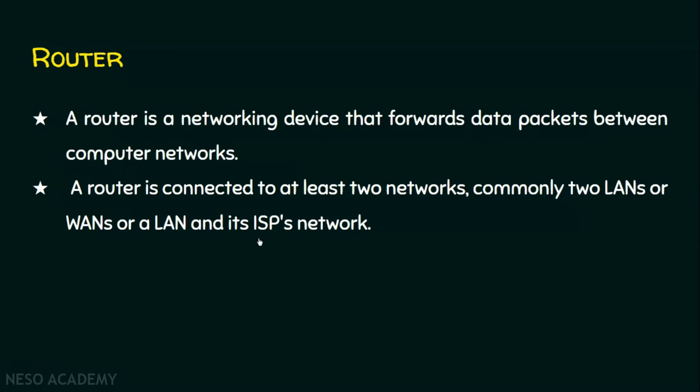We need the help of the internet service provider. Our router has two interfaces or ports: one interface connects to our local area network, and the other communicates with the router in the ISP's network. It is the responsibility of the ISP network to provide internet connectivity to our local area network. In summary, a router connects at least two different local area networks.